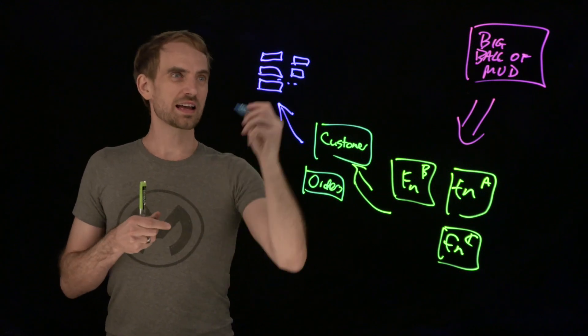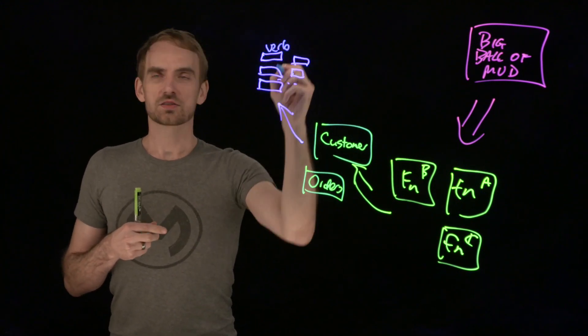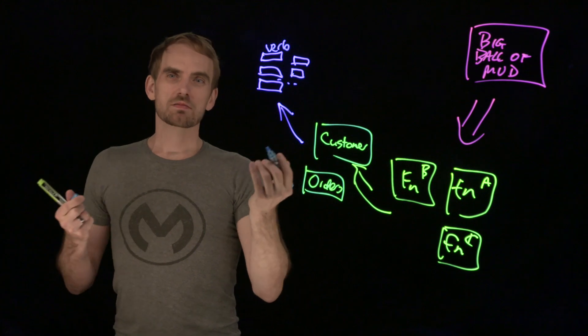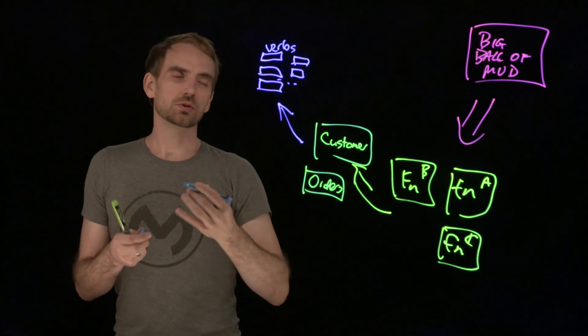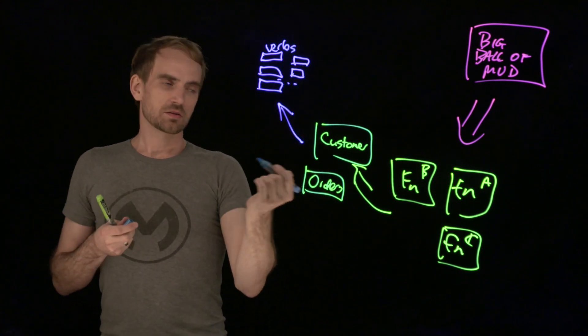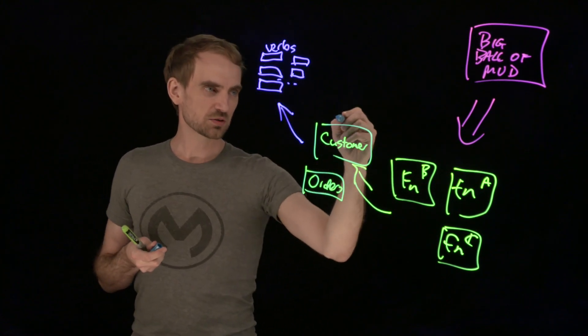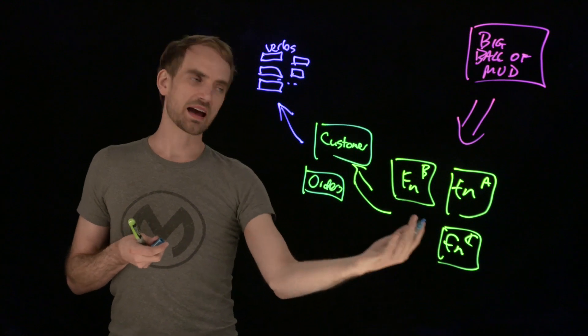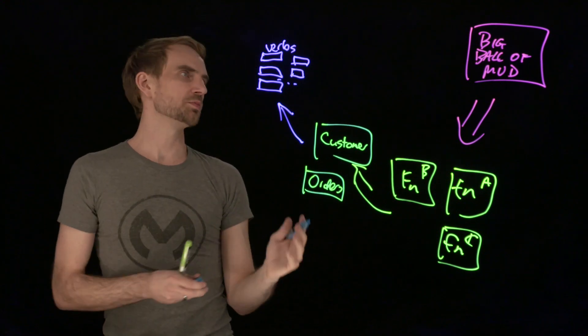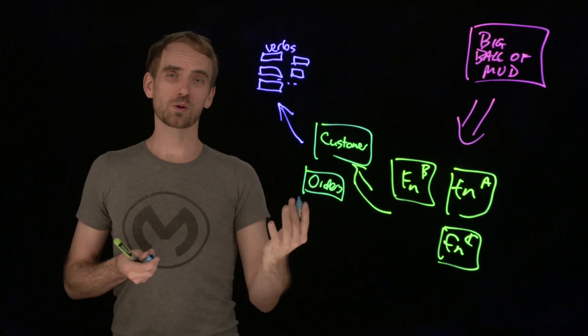So these would essentially have verbs in the name. You might see things like customer create or update customer, lodge order, create order, whatever. So you might start to see verbs in the names, these ones would probably have nouns, these ones would have the organization groups, and the big ball of mud will probably be your organization name.